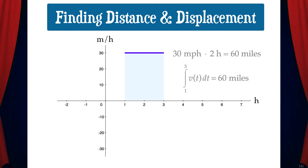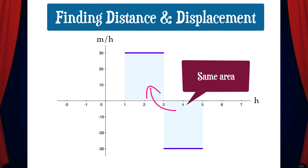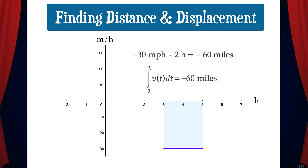Now let's suppose that between t equals 3 and t equals 5, the car is going in the opposite direction at negative 30 miles per hour. We can see that the area from 3 to 5 below the curve is the same as the area above the curve from 1 to 3. However, if we find the definite integral from 3 to 5, we'll get negative 60.